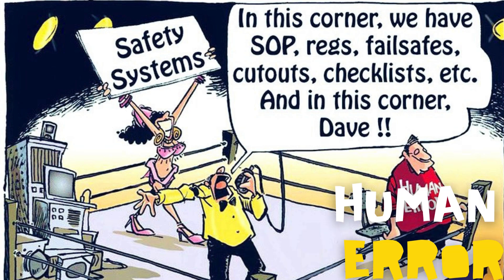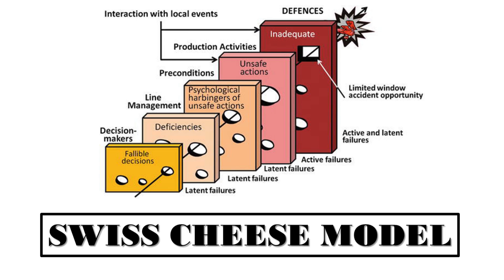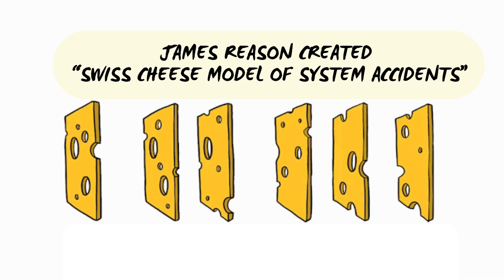Errors often stem from poor design, inadequate training, or flawed procedures rather than individual failings. Models like James Reason's Swiss Cheese Model show how multiple small failures across system layers can align to cause accidents, emphasizing that errors result from system-wide vulnerabilities. The Swiss Cheese Model, developed by psychologist James Reason, explains how complex systems — especially in aviation — can fail.